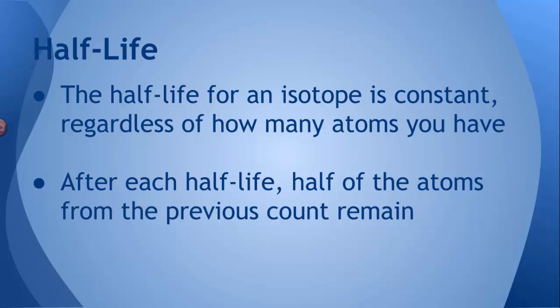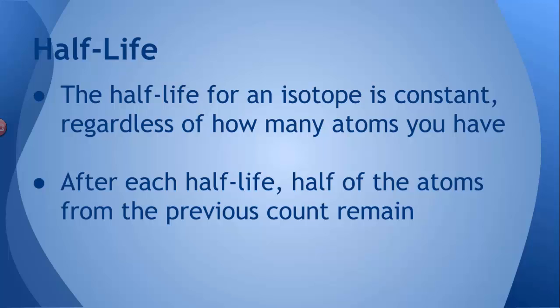After each half-life is done, you have half as many atoms as you just had left. That's a misconception about half-life. People think, half-life, after two half-lives, you have nothing left. No. After two half-lives, you have 25% or one quarter of what you started with. After three half-lives, you have one eighth of what you started with and so on and so forth.